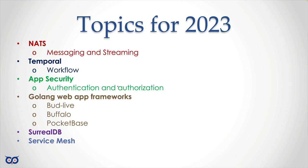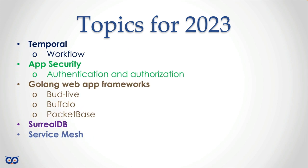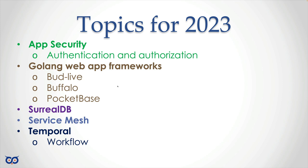Those last two are stretch goals, and I mentioned we most likely wouldn't get to them in 2023. Here's the change: we've already covered NATs, so that's taken care of. In terms of what's next, I don't think we should do Temporal now, because I think very few people are really interested in workflow orchestration. I love the idea — it's what we do at work — but it's a niche thing, so I'll push it off, even beyond service mesh.